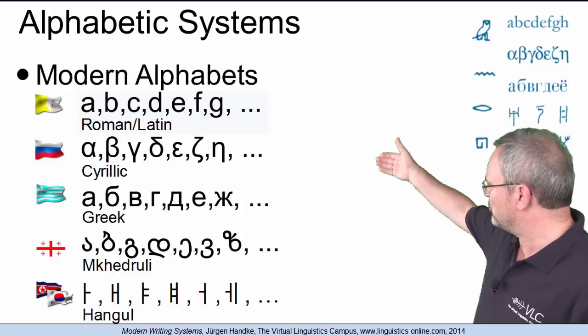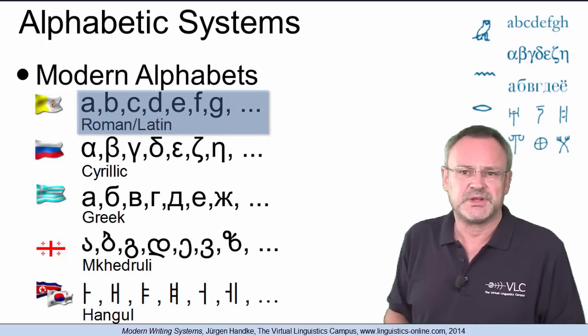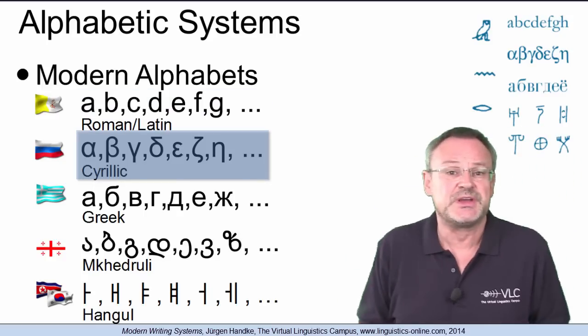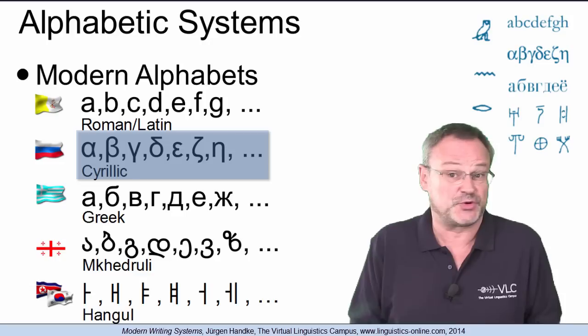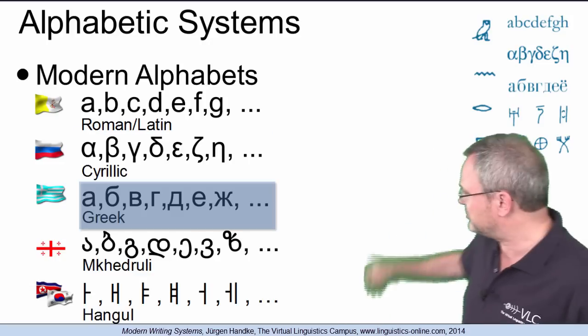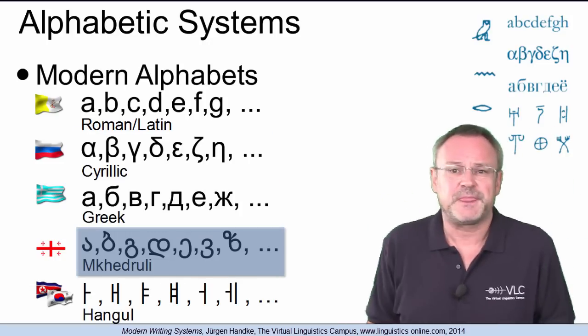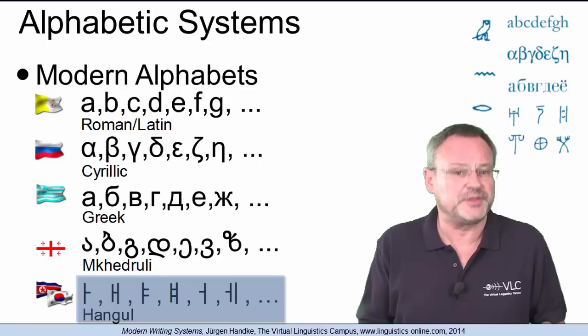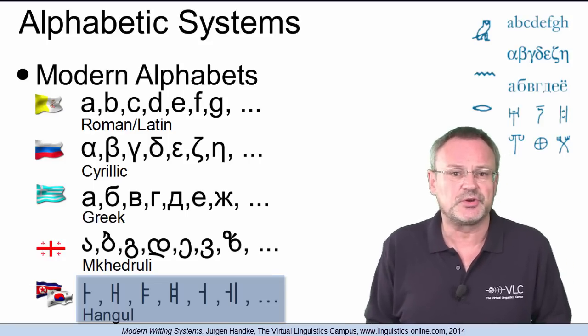The origin of most modern alphabetic writing systems can be traced back to the Phoenician alphabet. Here are some examples: the Roman or Latin alphabet, the Cyrillic alphabet used in some of the Balthoslavonic languages, for example in Russian, the Greek alphabet, the Creduli alphabet used in Georgian, or the Hangul system used in Korean.